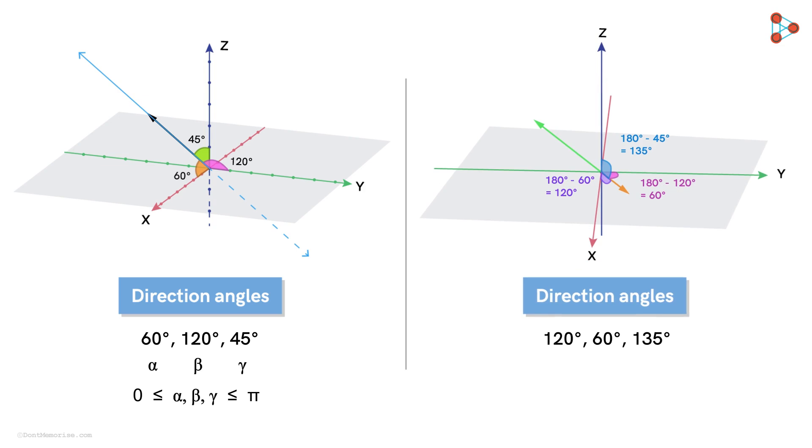We can denote them by alpha dash, beta dash and gamma dash. We will also want them to be in the range between 0 and pi, including 0 and pi.